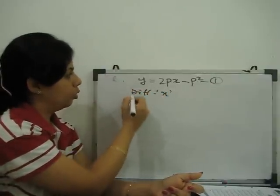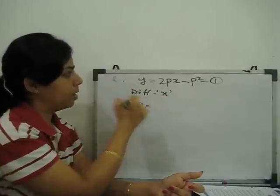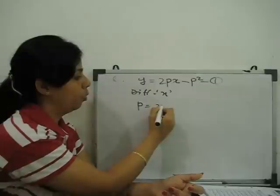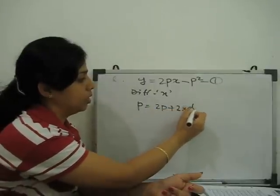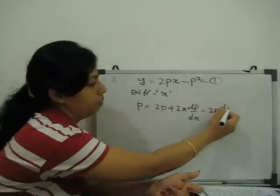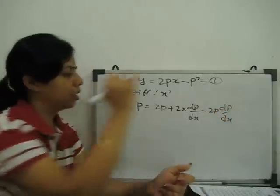So, this is p, dy by dx is equal to p. When we differentiate this, 2p plus 2x dp by dx minus 2p dp by dx.